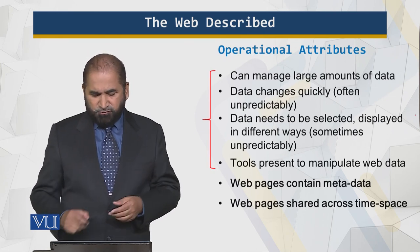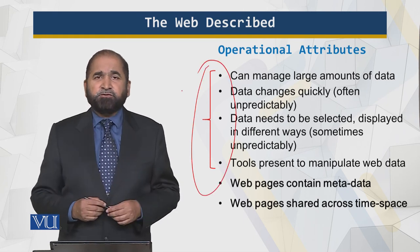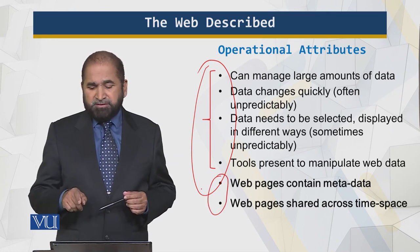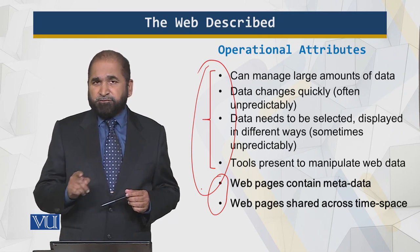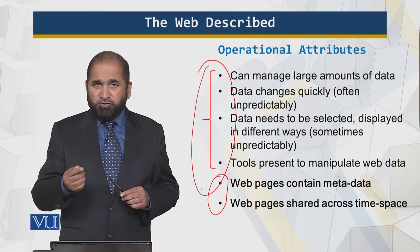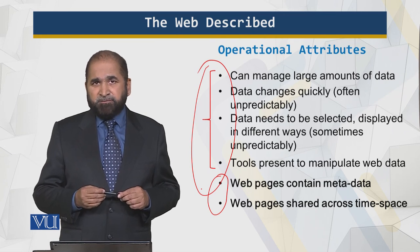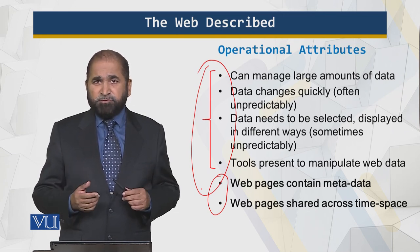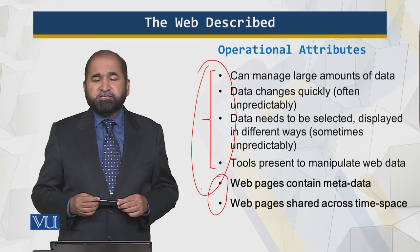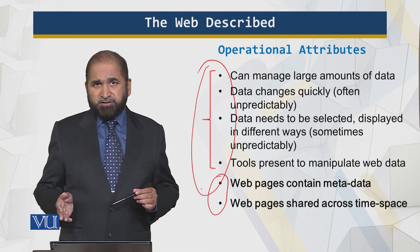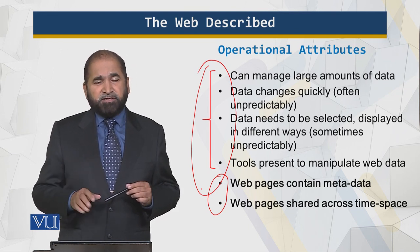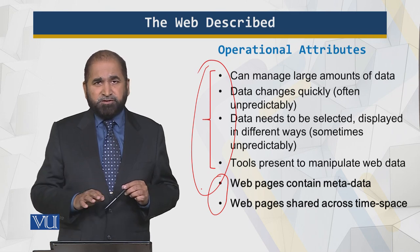There are also certain operational attributes of the web. What I have shown in the bracket here are very similar to the attributes of a database. The two highlighted attributes in bold are: first, web pages contain metadata. Unlike a database which only contains stored data, a web page may have a lot of metadata — tags that are not visible to the user but are present. Second, web pages are shared across time and space. The web is distributed by default, whereas a database is not by definition distributed.